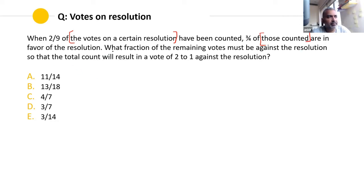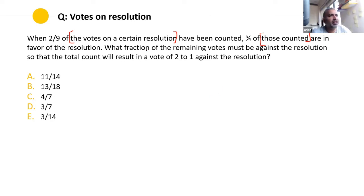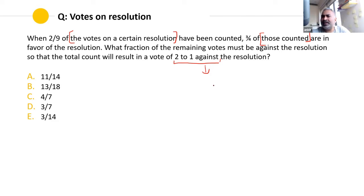What fraction of the remaining votes must be against the resolution? Two-ninths have been counted, so seven-ninths remain. What fraction of those remaining votes must be against, so that the total count will result in a vote of two to one against the resolution? That's a fairly complex sentence — let's break it down.